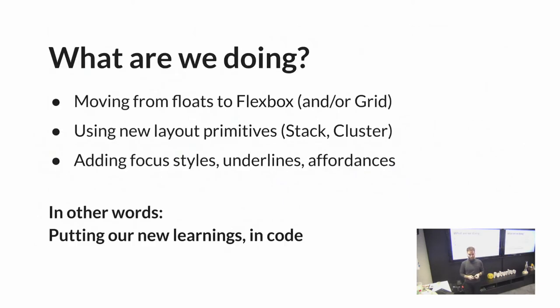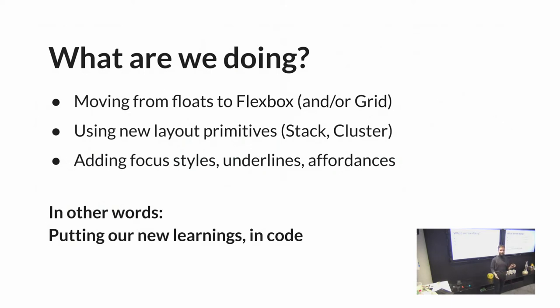I went and started opening issues. We had 48 open issues and pull requests. During this project over the summer, I ended up writing as much prose — long-form writing — as I did code, mostly just to explain and document everything, which is fantastic in my book. Specifically, what were we doing? Moving from floats to Flexbox, using new layout primitives like explicit components for stacks and clusters of things, and also adding focus styles, underlines, and other affordances. Since we were making these sweeping changes anyway, we might as well make the site more accessible. In short, we wanted to put new learnings into code.